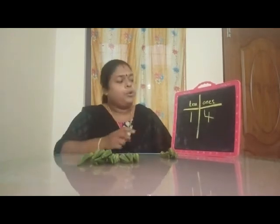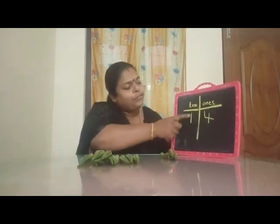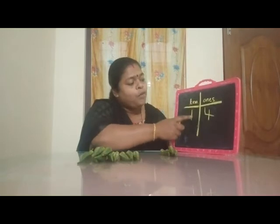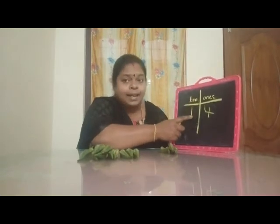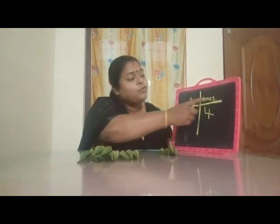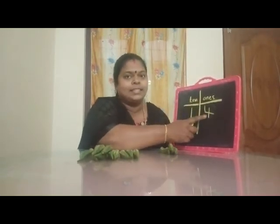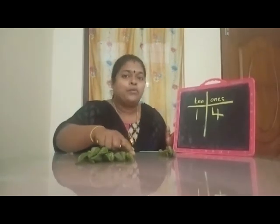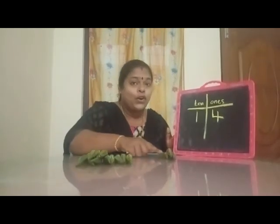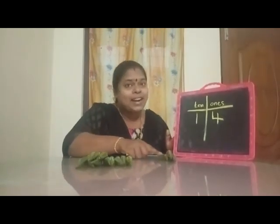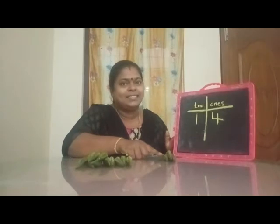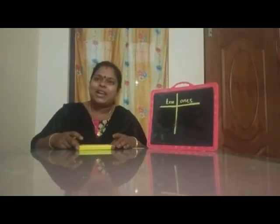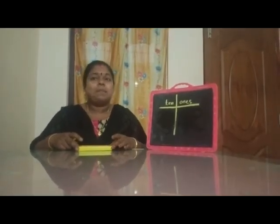Group of 10, group of 1. One ten, four ones. I have a box full of crayons. Let's make a group of ten.